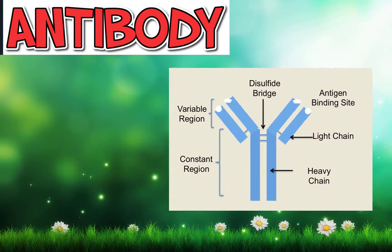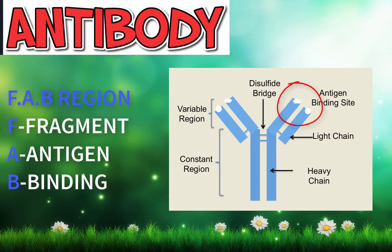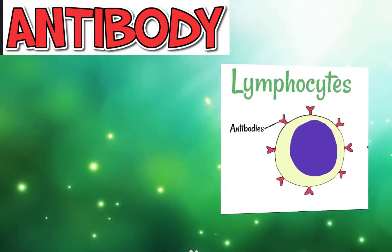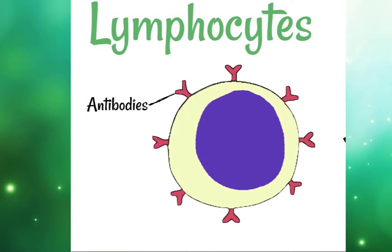Antibodies — you have seen a similar figure like this. This is known as antibodies, and they are only present on lymphocytes. This region is known as the Fab region, which is the fragment antigen binding region, which binds with the opposite antigen on the pathogens or any foreign particles.